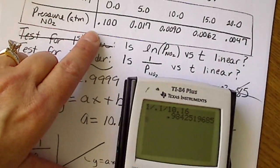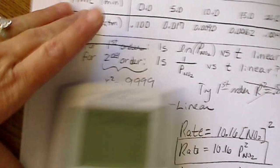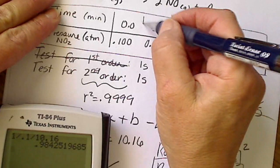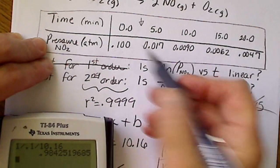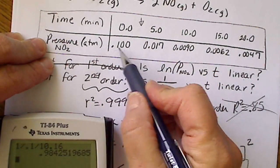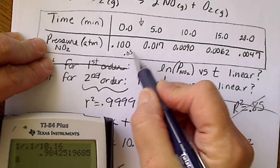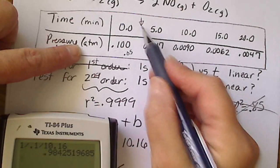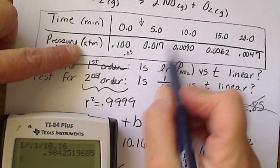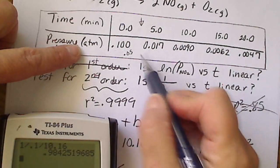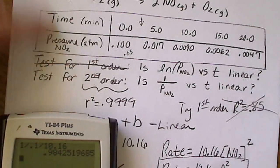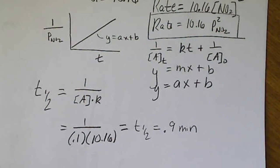Looking at the graph, 0.9 minutes is not very far along. When half of our initial concentration is gone, we'd have 0.05 atmospheres remaining — and that's about 20% of the way across the graph, which makes sense if we double-check that the half-life is reasonable. The graph extends to about 2 minutes total.